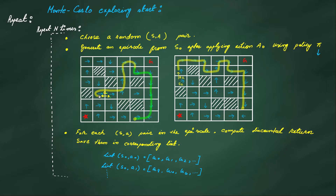So for this state, if you're in this state, the policy says go right. Once we are here after applying the first action A1, we follow the policy. We have to go here, from here we go here, then up and up, then right, down, right, down, down, down, down, down and left. We execute the policy for a fixed number of steps. Once we are at the end of the policy, for each state-action pair we see in the environment during this episode, we need to compute the return.